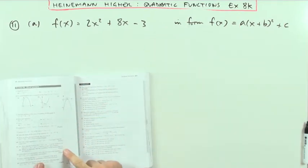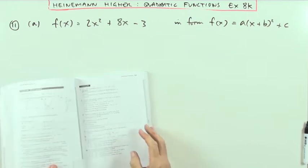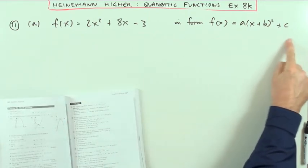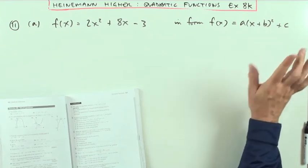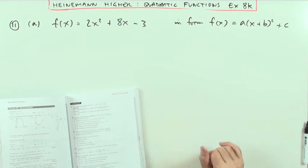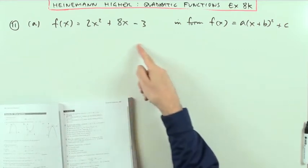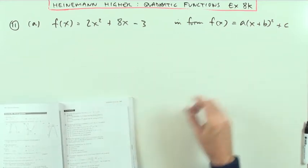Number 11, another form of Hyatt question, two parts. First part, show that this function can be written in the form of this, which is a completed square, where A, B and C are constants, but it doesn't ask you to state them. So that just means once you've got it looking like that, you can leave it, you don't then need to make a comparison.